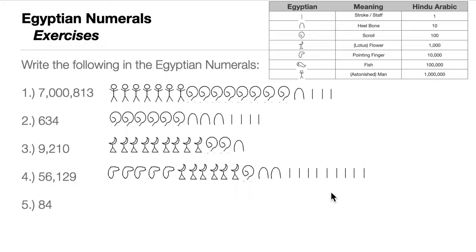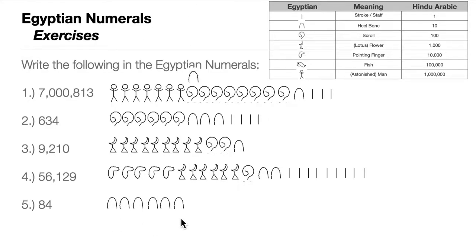For number five, 84: write the heel bone eight times (80) and the stroke four times (4).